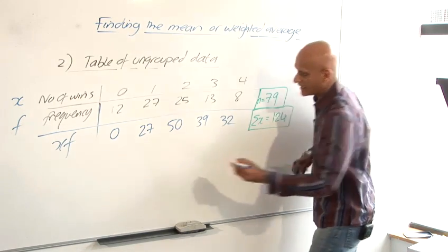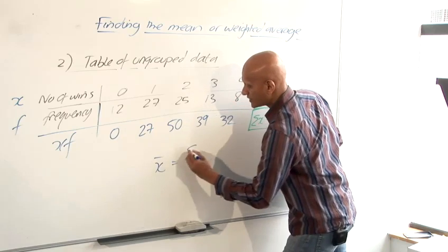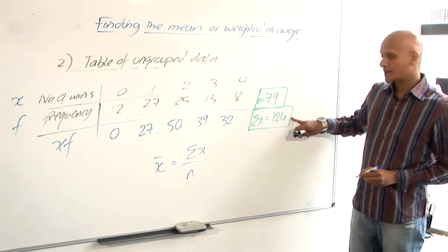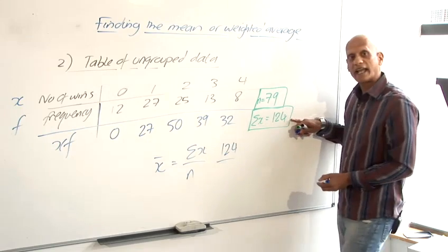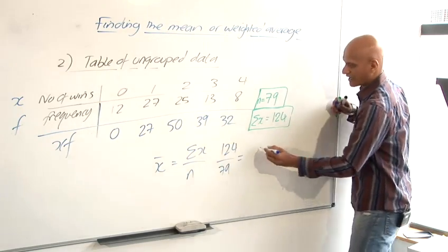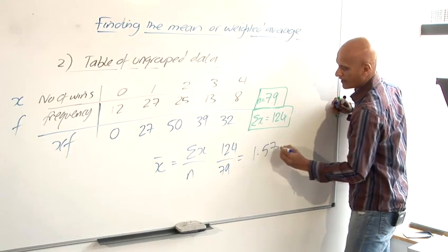And then now to find my mean, I do the same formula as last time, sigma x over n, except this time my sigma x is here, 124. And my n is here, 79. And again, sticking it into the calculator, you get a mean of 1.57.